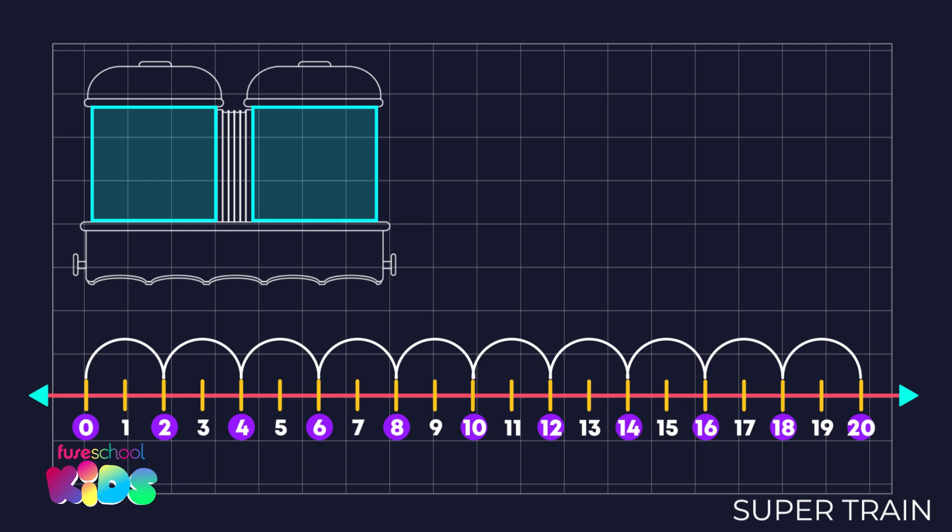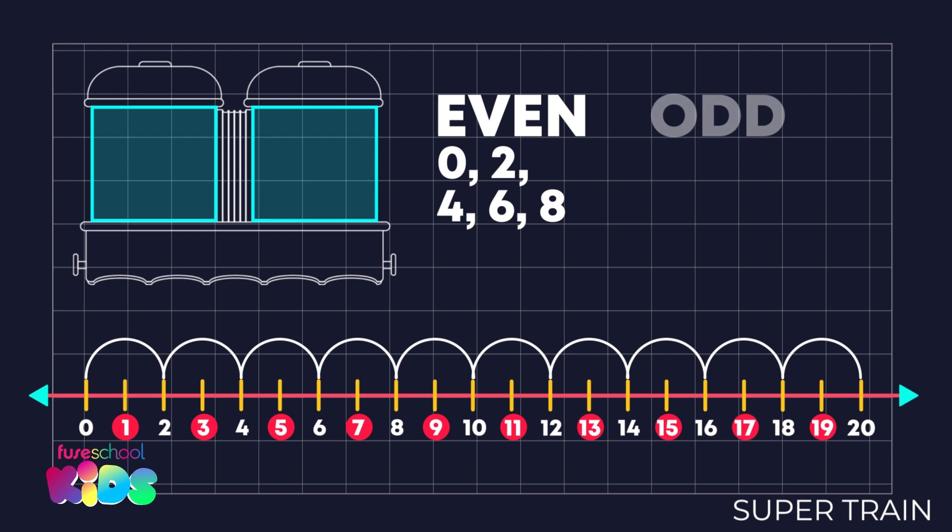These numbers are called even numbers. Repeat after me. Even numbers. Even numbers end in 0, 2, 4, 6 and 8. The other numbers are called odd numbers. Odd. Say it with me. Odd numbers.